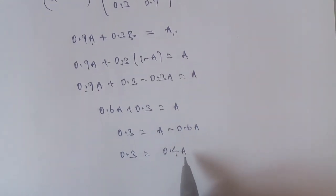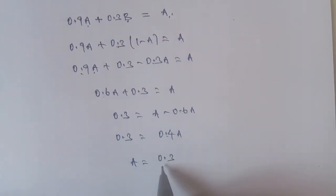0.3 equals 0.4A. A is equal to 0.3 divided by 0.4. The answer is 0.75. A is equal to 0.75.